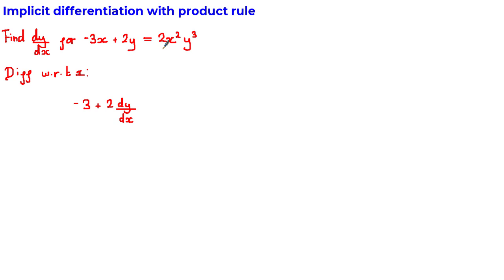However, as we determined earlier, this is a product of X and Y terms. Therefore, we actually need to use a combination of the product rule and implicit differentiation methods to find the derivative of the right hand side.